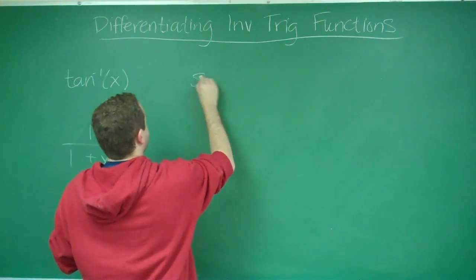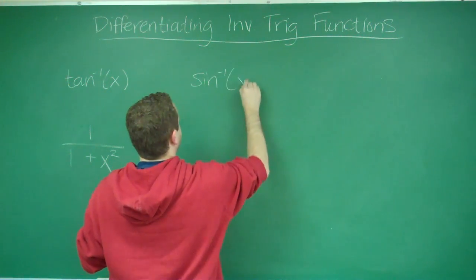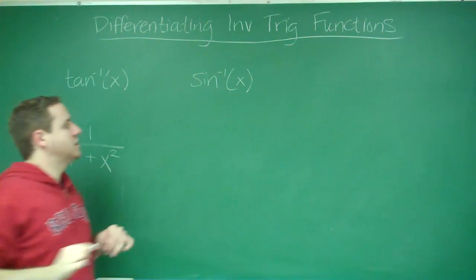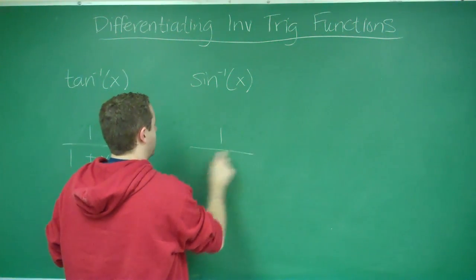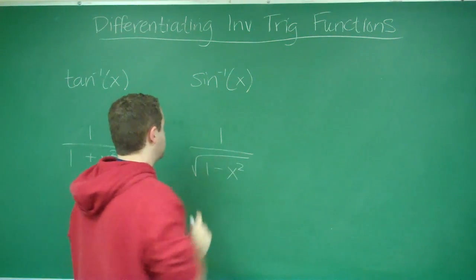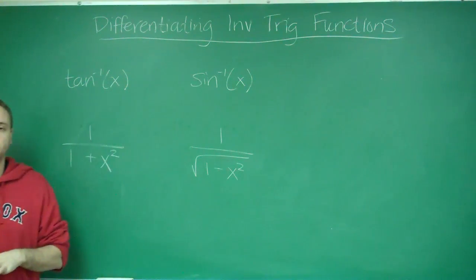The other two that you're going to need to know are arc sine and arc cosine. The function arc sine of x, your derivative there is going to be 1 over the square root of 1 minus x squared.